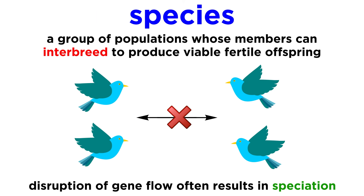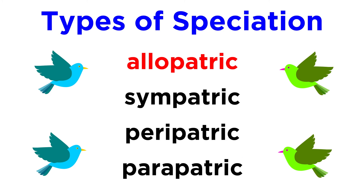As we said, when one or more of these barriers arise and gene flow is restricted, speciation can occur, and there are different types of speciation that we should be aware of. These are allopatric, sympatric, peripatric, and parapatric.